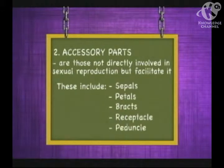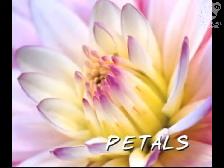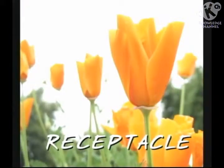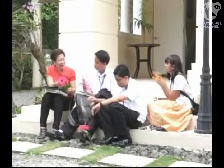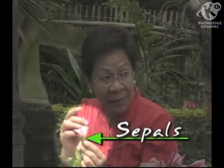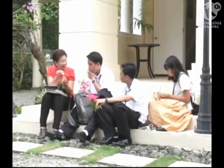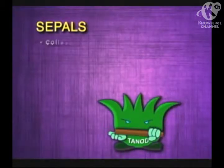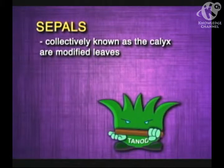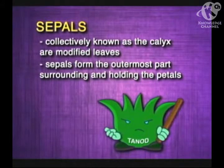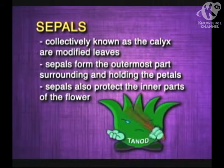The accessory parts also include the receptacle and the peduncle. Can we identify the structures in these flowers we have here? Let us identify these accessory parts. These green parts here are called the sepals, and are collectively called the calyx of the flower. These are the petals, which are collectively called the corolla. The sepals, collectively known as the calyx, are the modified leaves. Sepals form the outermost parts surrounding and holding the petals. Sepals also protect the inner parts of the flower.